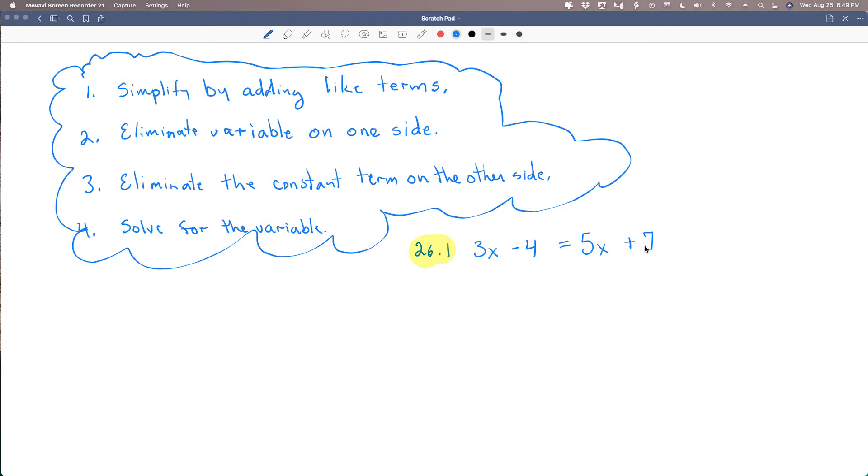So now we eliminate the variable on one side. I don't like to do negative variables. You can if you want, but I prefer positive variables if at all possible. It makes the process a little easier. So I'm going to subtract 3x from this side and 3x from this side. This will cancel. And then that's going to leave a negative 4 on this side and a positive 2x plus 7 on this side.